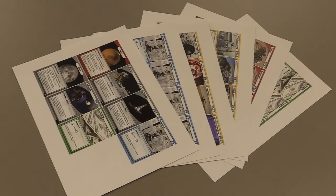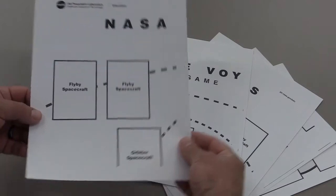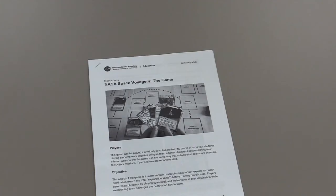For each team, print out the following: one deck of game cards, double-sided on eight and a half by eleven paper; game mat, single-sided on eight and a half by eleven paper. You can also print out the game instructions for quick reference.